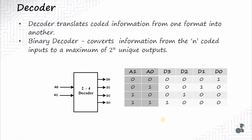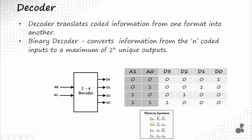For a given coded input, the binary decoder output represents all the possible min-terms. These four outputs d0 to d3 can be written as follows: d0 is high only when a1 and a0 are both 0, so d0 equals a1 bar AND a0 bar. Similarly, d1 is a1 bar AND a0, d2 is a1 AND a0 bar, and d3 is a1 AND a0. All these are min-term representations for a function of two inputs a1 and a0.